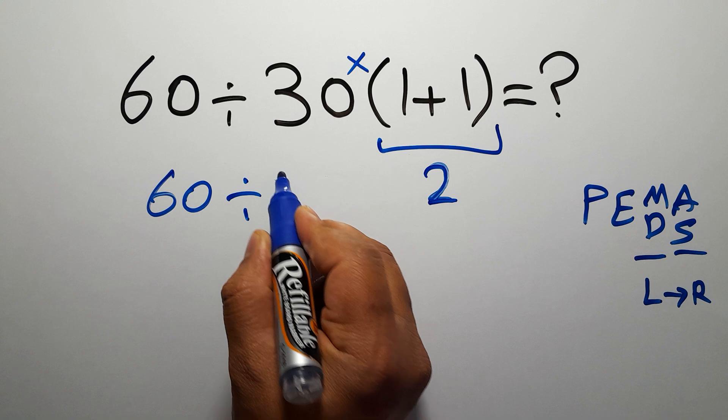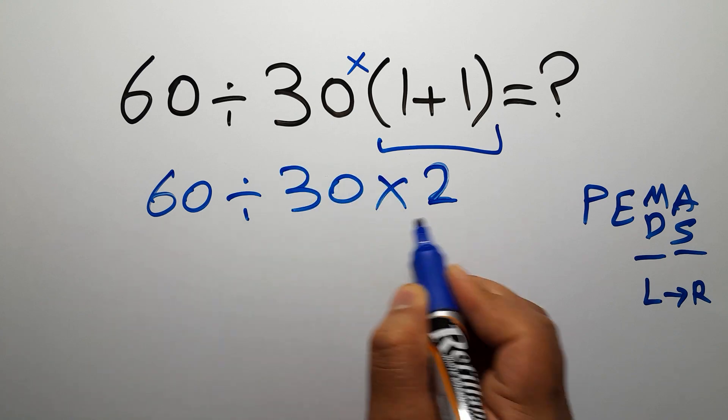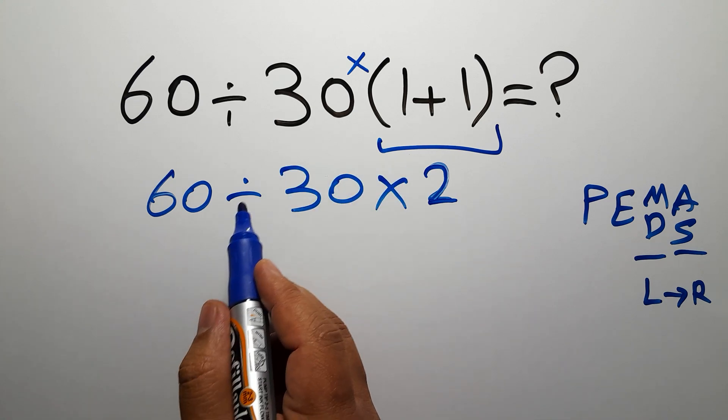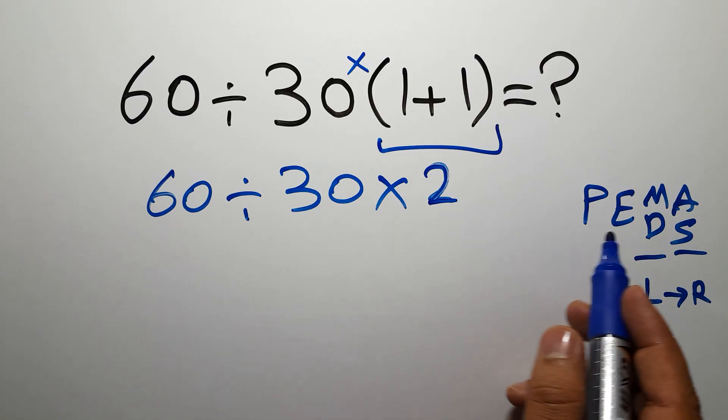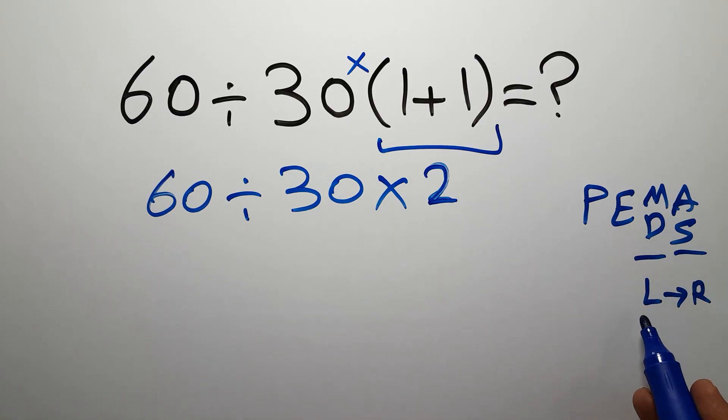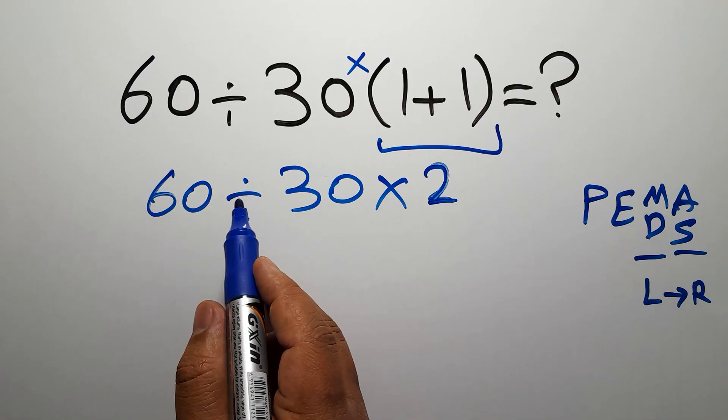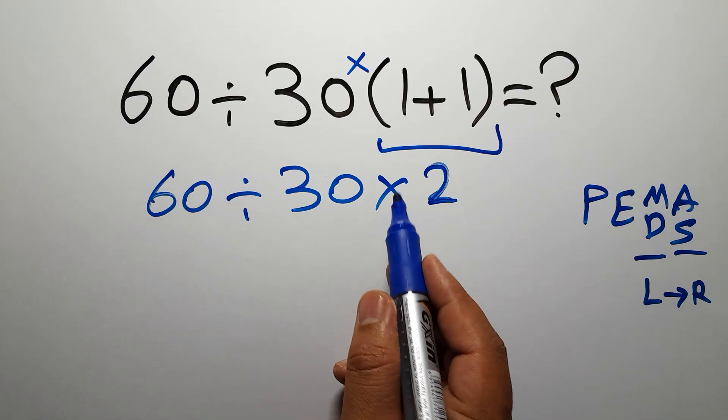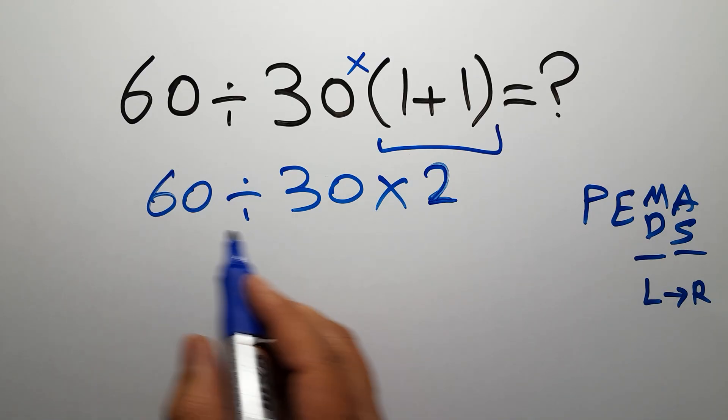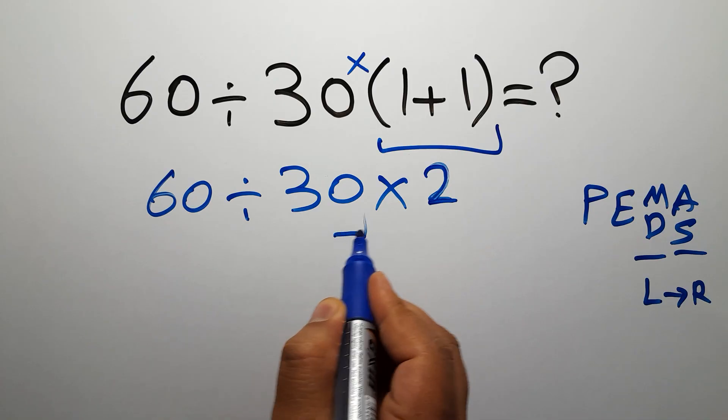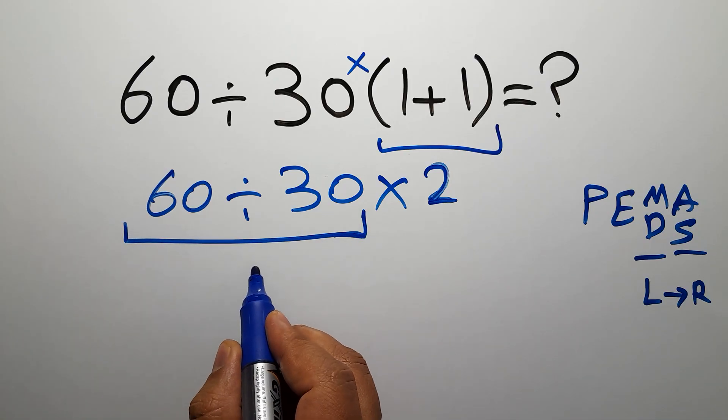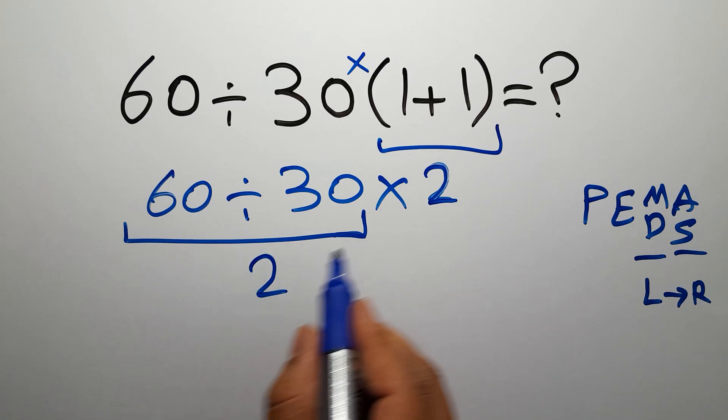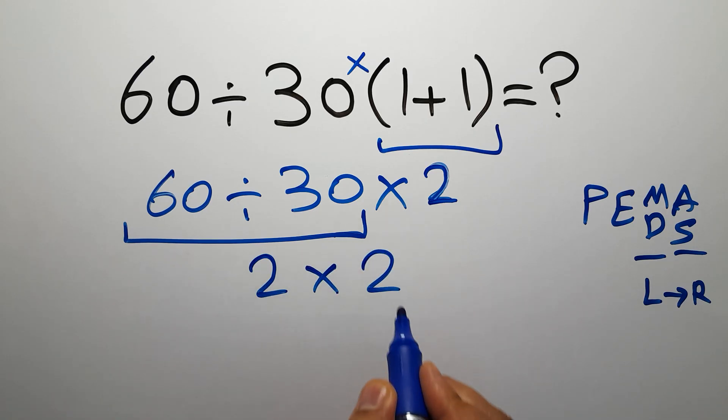Now we have one division and one multiplication. As I said, multiplication and division have equal priority and we have to work from left to right. So now we have to do this division, not this multiplication. 60 divided by 30 equals 2, and 2 times 2 equals 4.